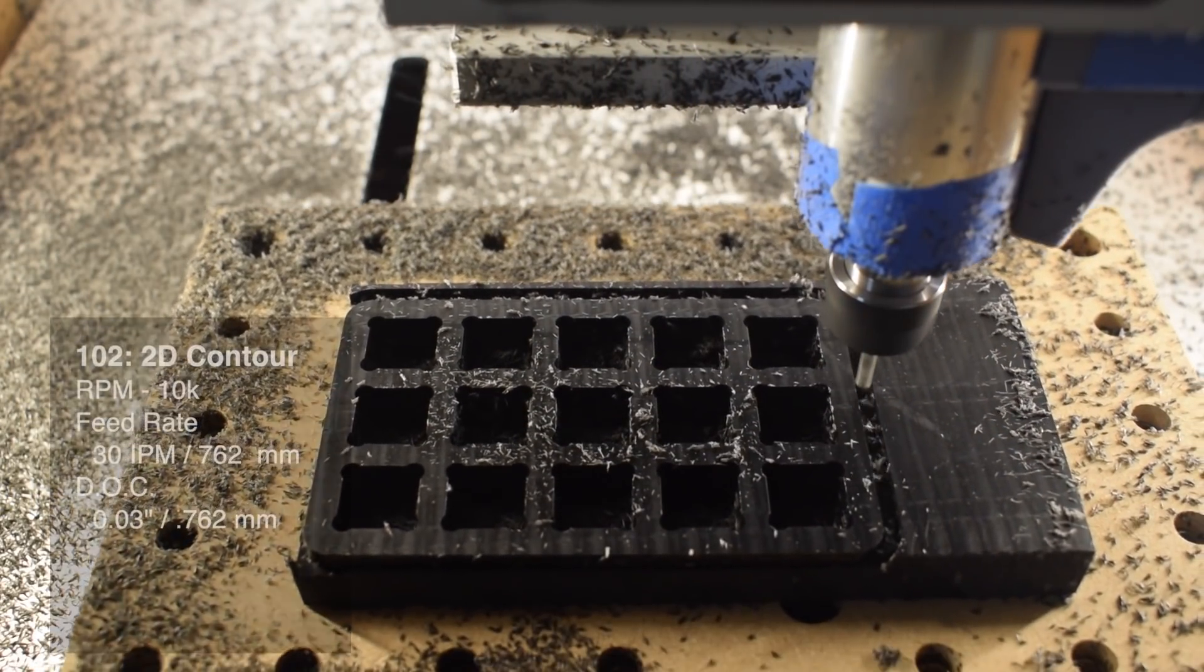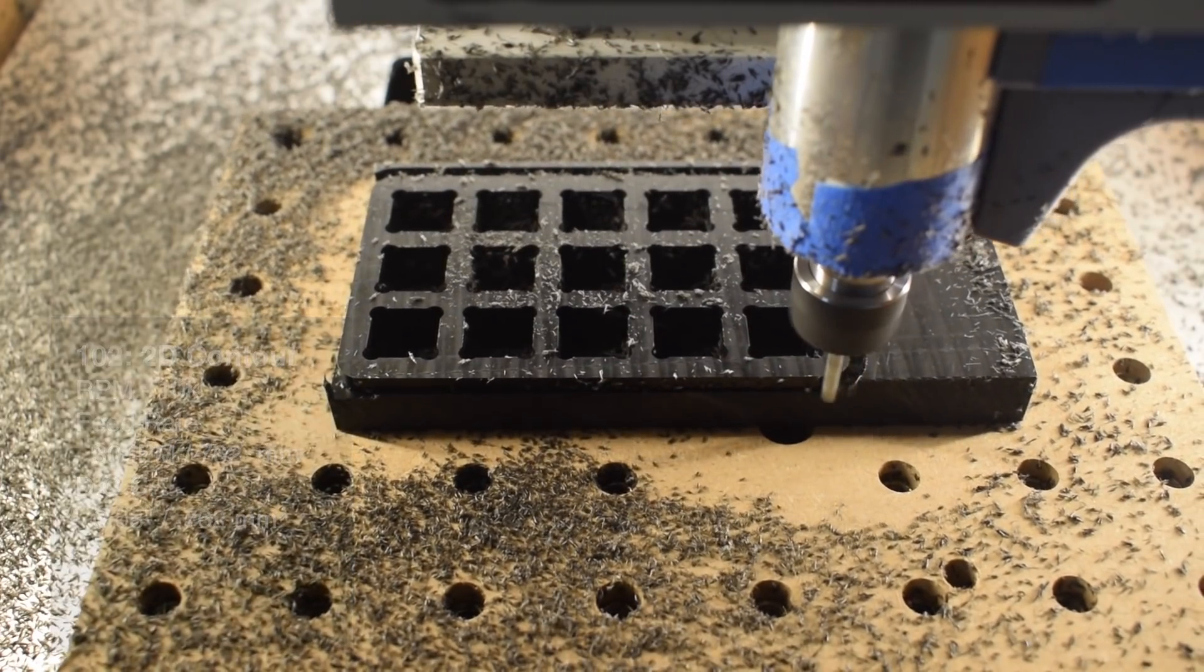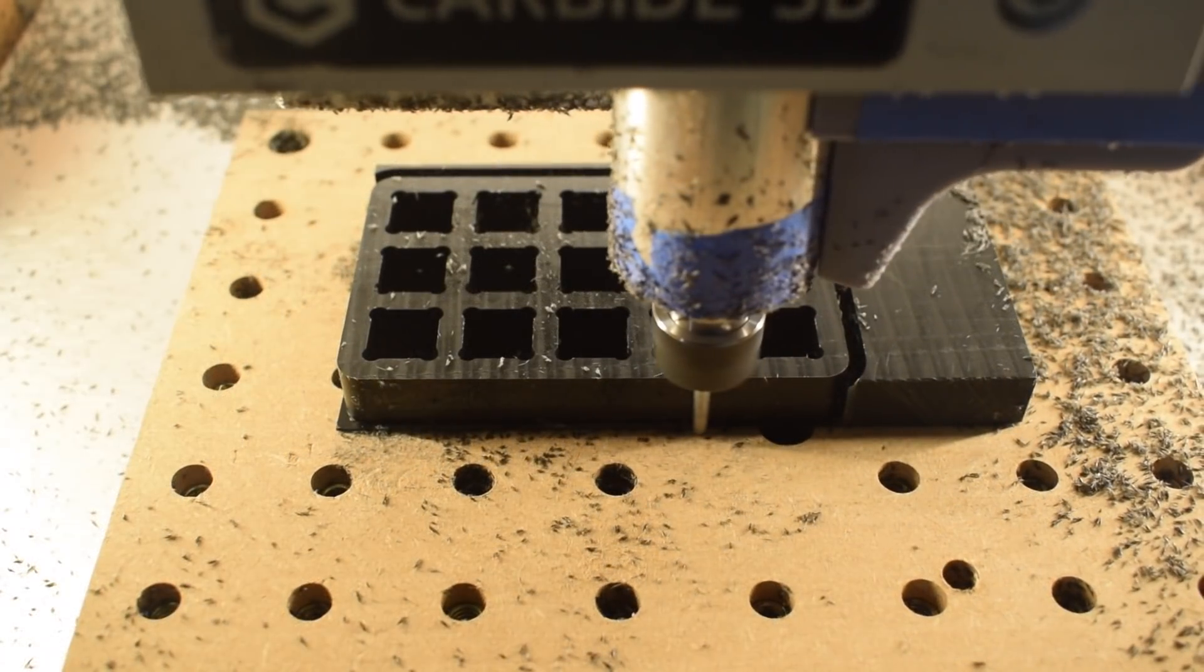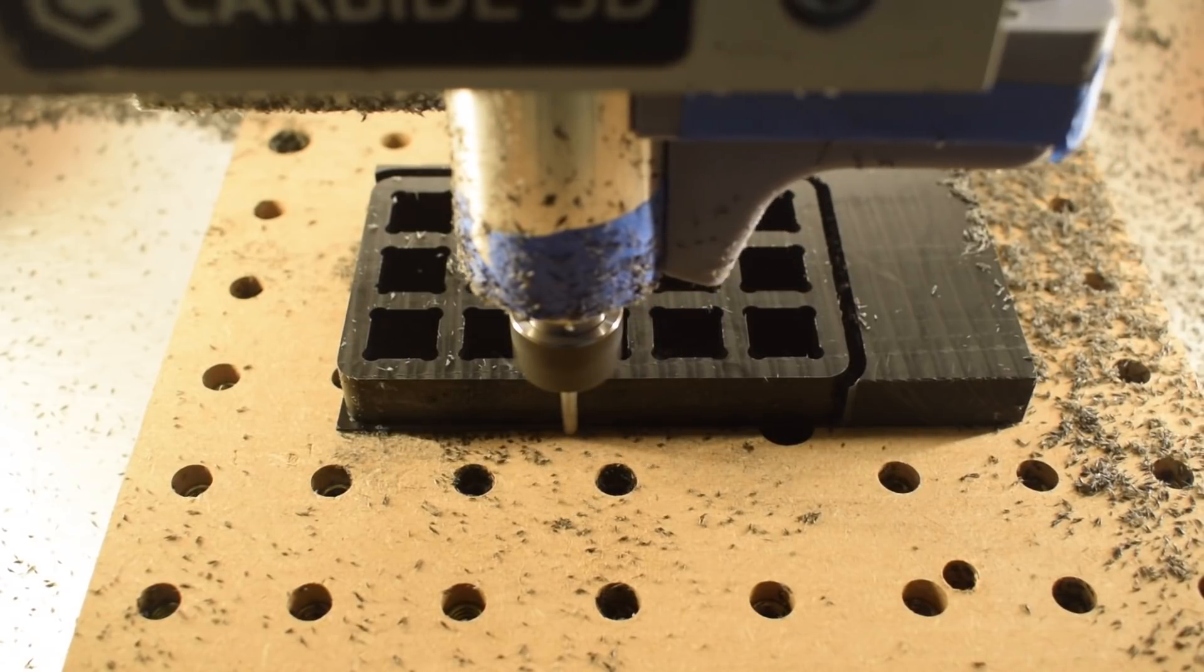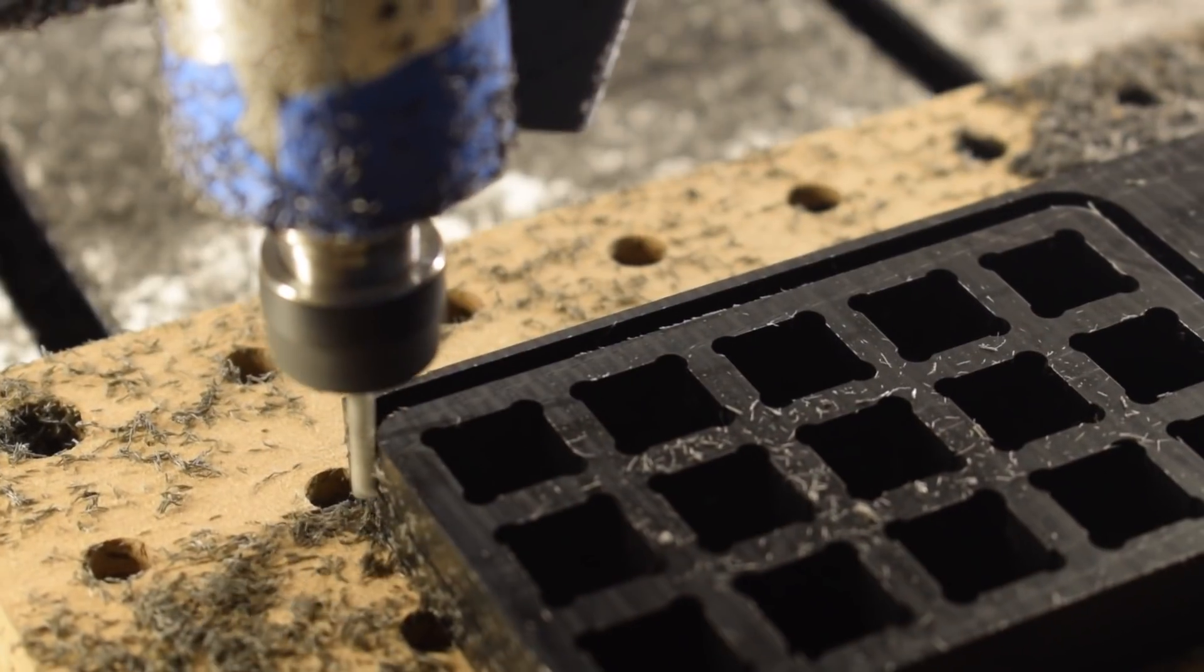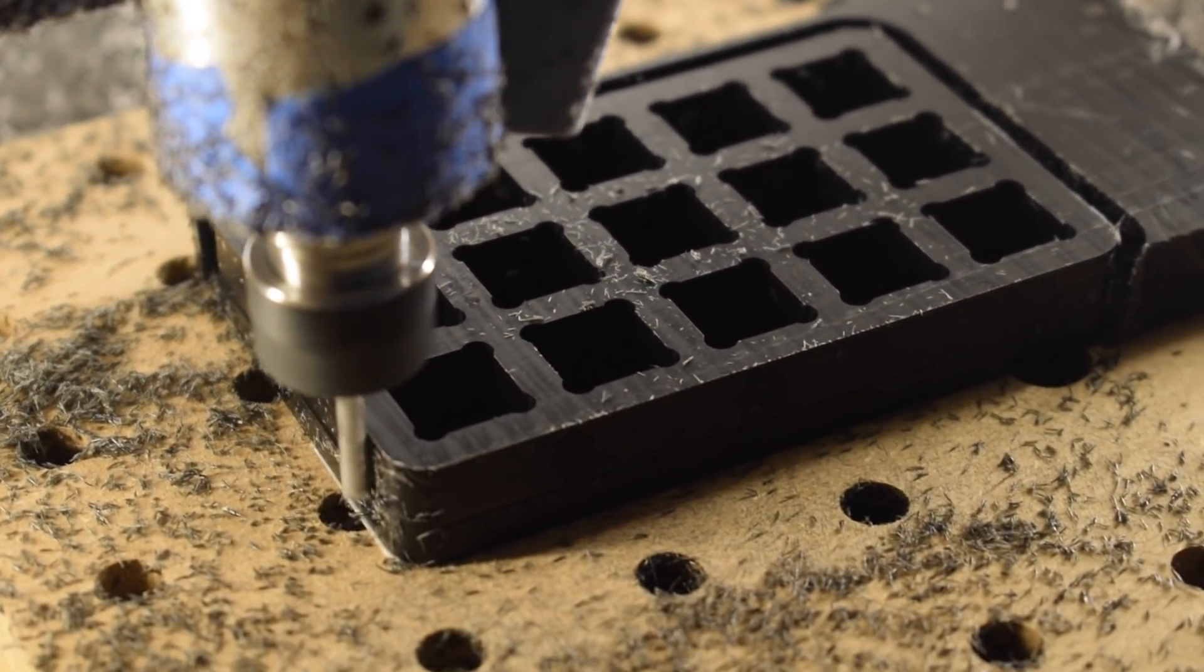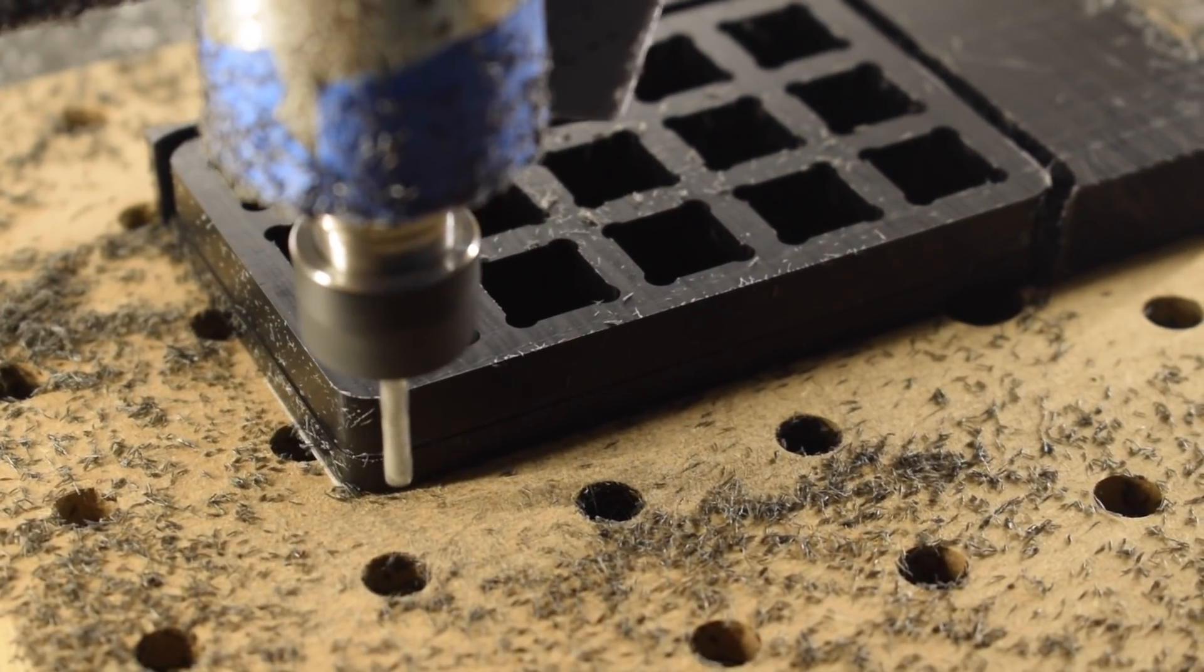And lastly, contouring or slotting: 10,000 RPM, 30 inches per minute, 0.03 inch depth of cut. I backed off on the cutting parameters compared to the pocketing feeds and speeds just to keep the machine sounding happy, but again, you can be more aggressive than this if you want. And if you keep 10,000 stock to leave on your walls and you come back with a conventional finishing pass, you'll have super clean walls that look excellent.